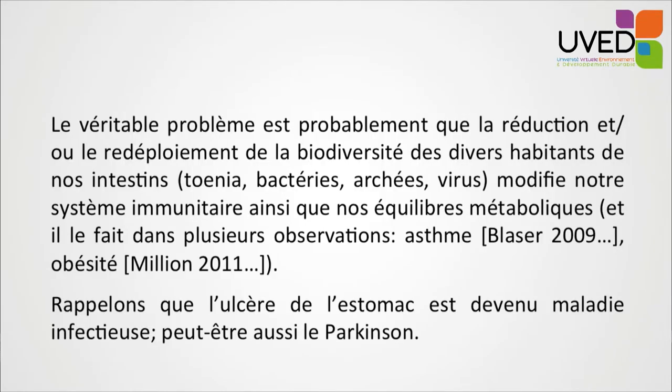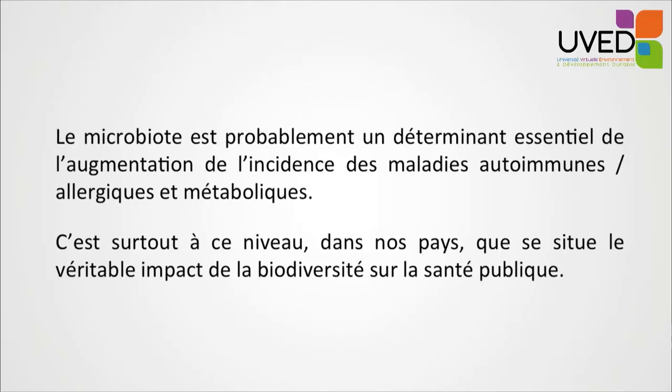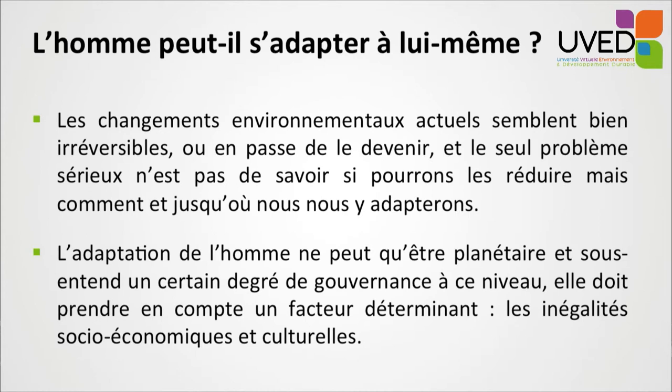The real issue is that restoring biodiversity in the various habitats, including our guts and the bacteria, fungi, and viruses that inhabit them, is changing our immune system as well as our metabolic balance. There are examples of the microbiome interaction with diseases: the stomach ulcer is now an infectious disease, but possibly Parkinson's disease as well. The stomach ulcer no longer requires psychiatry — rather, you take antibiotics to kill Helicobacter pylori and the patient is treated within weeks. Therefore, the change in microbiota is probably an essential determining factor for the increase in incidence of autoimmune diseases, and this has an impact on public health.